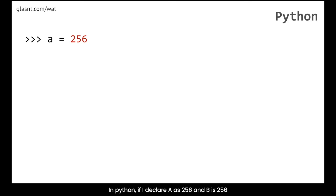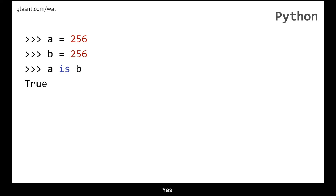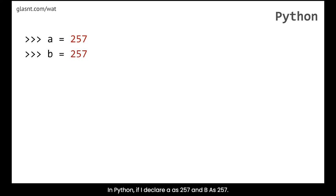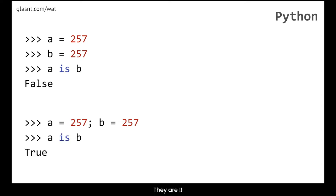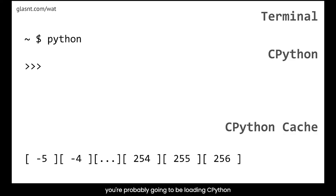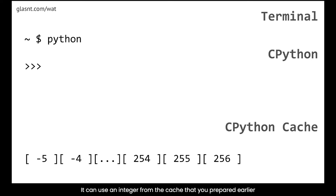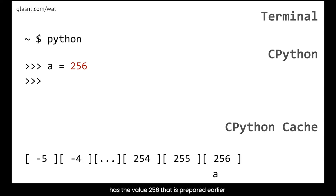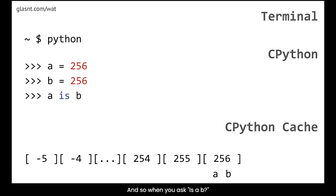Let's talk about Python. In Python, if I declare A as 256 and B as 256, is A B? Yes. If I declare A as 257 and B as 257, is A B? No. But if I declare them on the same line and check, they are. When you load Python in your terminal you're probably loading CPython. An optimization of CPython is to create a list of integers from negative 5 to 256 as an integer cache. When you assign a variable, it can use an integer from that cache prepared earlier.